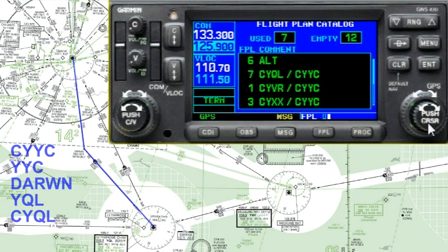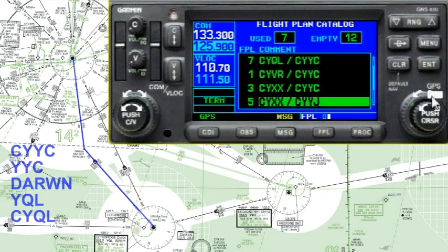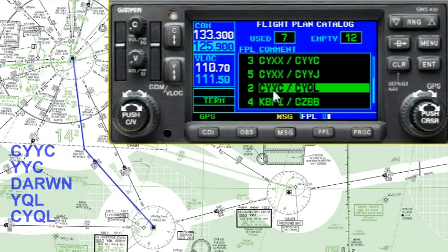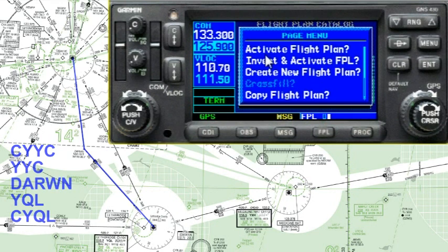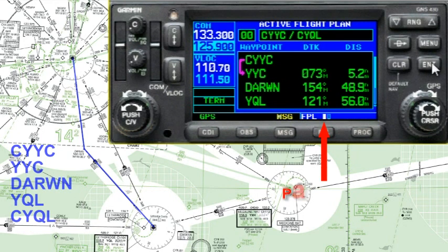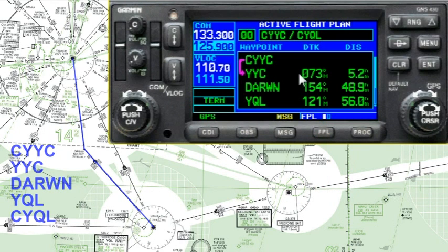Now we've got our flight plan set up for our alternate. It's time to do the flight plan from Calgary to Lethbridge. Locate that flight plan, go menu, and activate flight plan is at the top. Hit enter and this kicks us back into the flight plan. At this point we're basically good to go. However, since the purpose of this video is to show you how to build a flight plan, I'm going to delete this one and rebuild it.